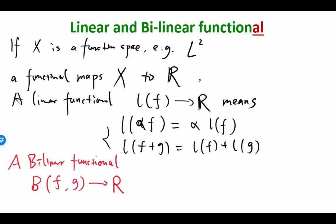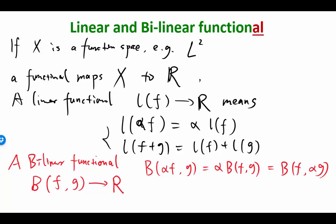So a bilinear functional b(f, g) maps to ℝ, and both f and g have to satisfy the linearity property. That means b(αf, g) = α·b(f, g) = b(f, αg). The alpha can go into either f or g. It also requires b(f1 + f2, g) = b(f1, g) + b(f2, g).